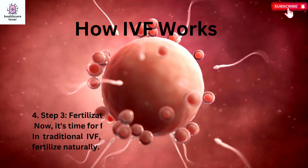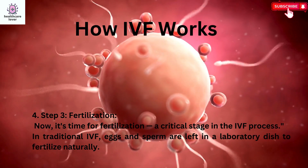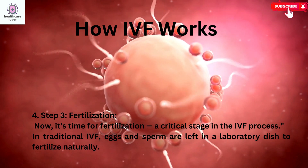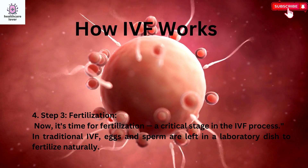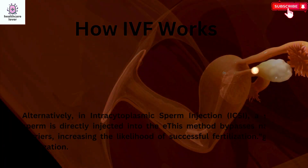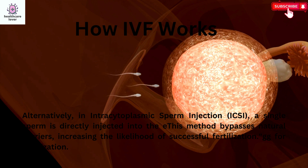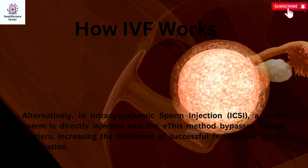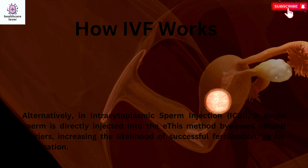Step 3: Fertilization. It's time for fertilization, a critical stage in the IVF process. In traditional IVF, eggs and sperm are left in a laboratory dish to fertilize naturally. Alternatively, in intracytoplasmic sperm injection, or ICSI, a single sperm is directly injected into the egg for fertilization. This method bypasses natural barriers, increasing the likelihood of successful fertilization.